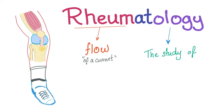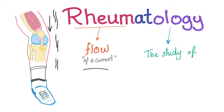Let's break this word down — Rheumatology. Rheum means flow, of a current, such as a thin fluid. They used to think about rheumatology as a fluid spreading across the body, causing symptoms in different organs with different conditions. The disease actually is not flowing as a fluid, as you know, but the old name remains the same: Rheumatology, meaning the study of.